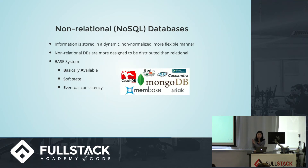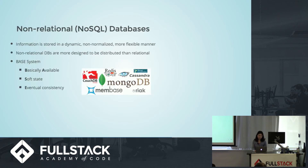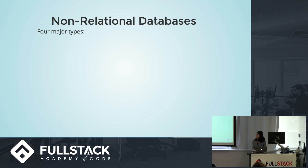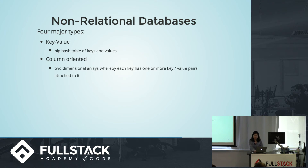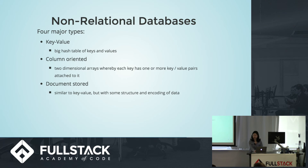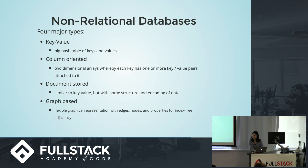There are four major types of non-relational databases, which specify how data is stored. Key-value pairs are stored in a big hash table. Column-oriented is a two-dimensional array of key-value pairs. Document storage is similar to key-value but there's some structure or encoding, such as XML or JSON. And graph-based are like trees with edges, nodes, and properties, so there are no indexes.